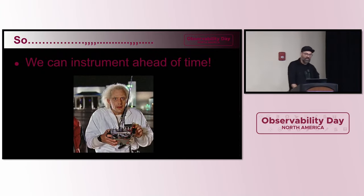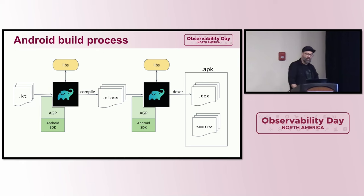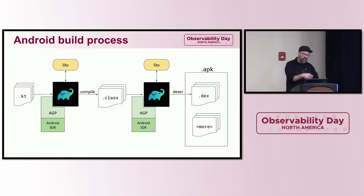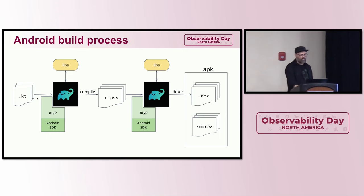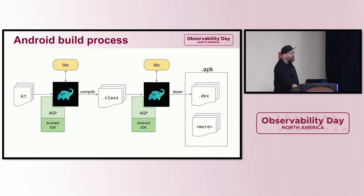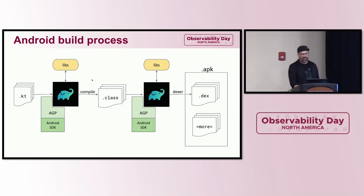In the Android world, we can instrument ahead of time. This is called compile-time instrumentation, ahead-of-time instrumentation, or build-time instrumentation. Looking at the Android build process: you have Kotlin or Java source files, you use Gradle with the Android Gradle Plugin (AGP) sitting on top of the Android SDK, and it compiles your source code with third-party libraries into a set of class files.